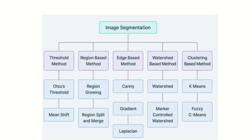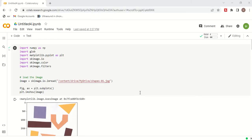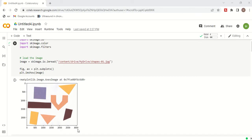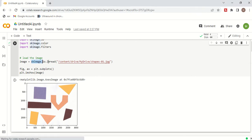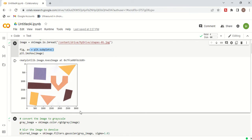Now there are different techniques to do image segmentation. Today we are going to see the first technique, which is the threshold method. In the threshold method we are going to discuss Otsu's threshold. We will see some Python code on how to do image segmentation. Here I have taken an image which has multiple objects.